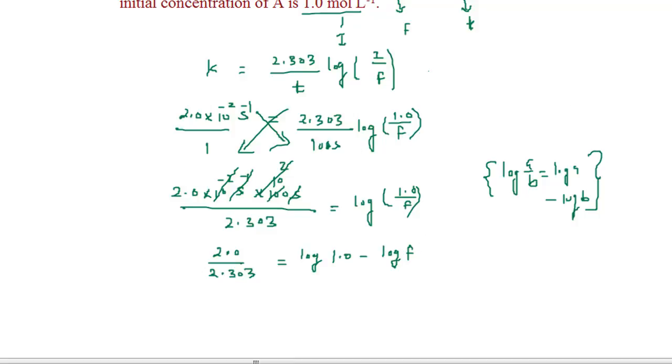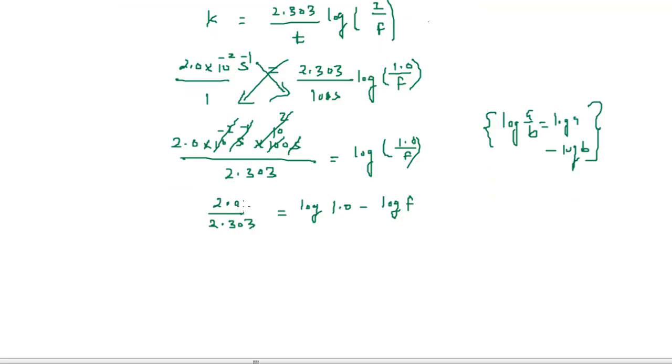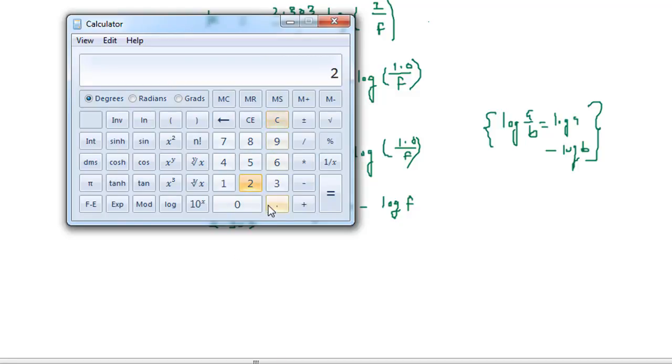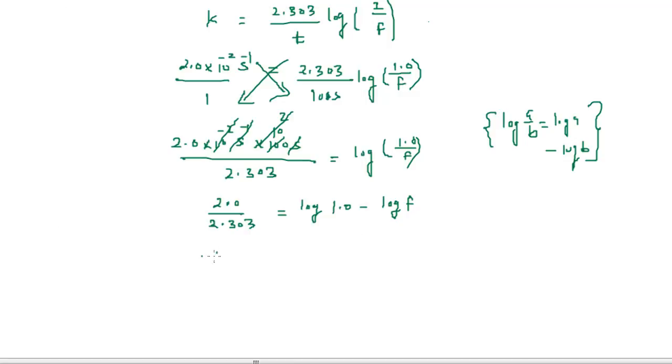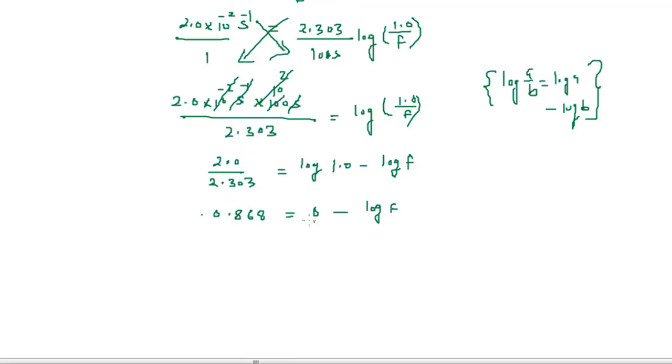Now we can divide 2.0 by 2.303. Here we have 2.0 divided by 2.303, the value which we get is 0.868. So 0.868 equals log 1.0, which equals 0, minus log final amount.